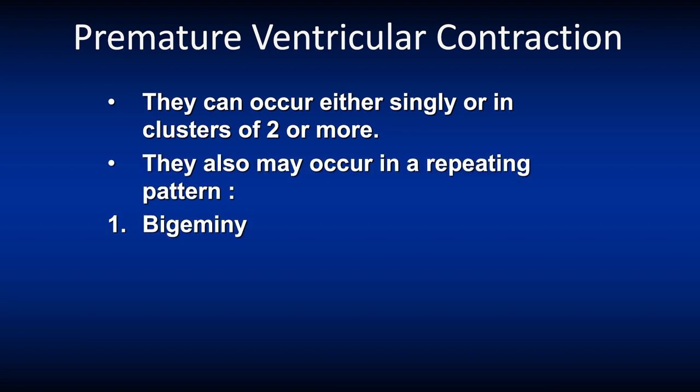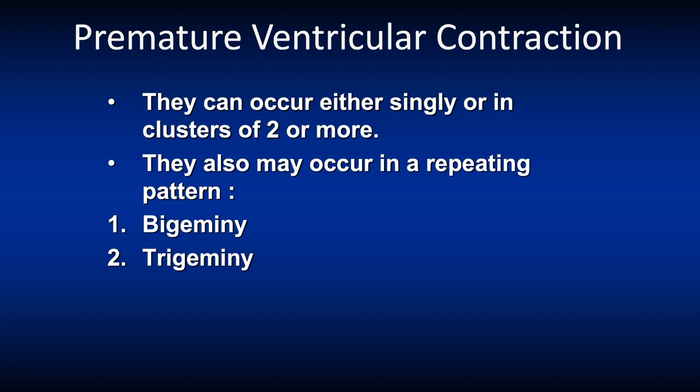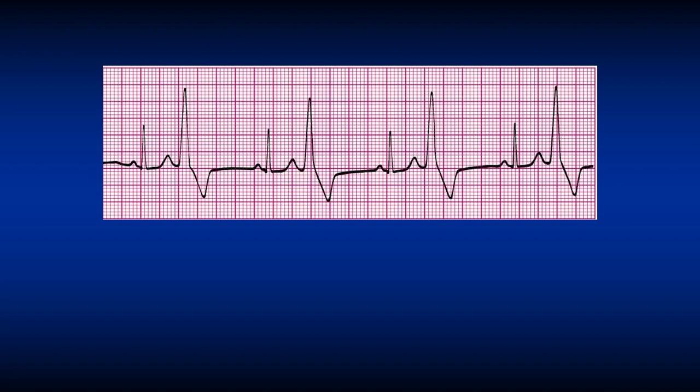You get bigeminy, trigeminy, and quadrigeminy. Here we see one normal sinus beat and then a PVC, one normal sinus beat and another PVC, and this pattern continues throughout the strip. This repeating pattern is called bigeminy.